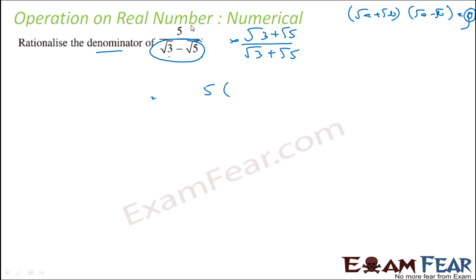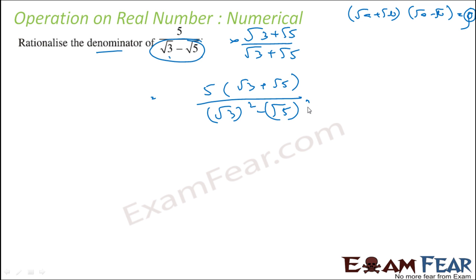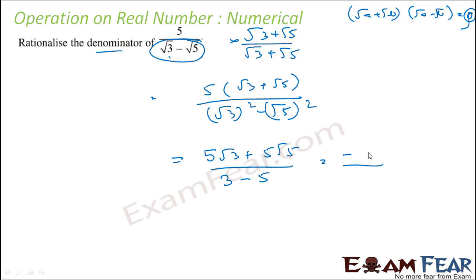So this becomes 5 into 2, times root 3 plus root 5, divided by root 3 squared minus root 5 squared. The numerator becomes 5 root 3 plus 5 root 5. The denominator becomes 3 minus 5, which is minus 2. So we divide by minus 2, and the result is a rational denominator.